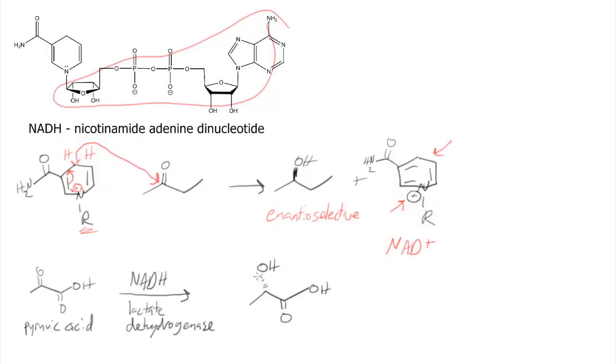And it reduces the carbonyl next to the carboxylic acid, and gives only S-lactic acid. It's 100% selective. So in the process of this, it also then reforms NAD plus, which can now enter back into the glycolysis cycle.